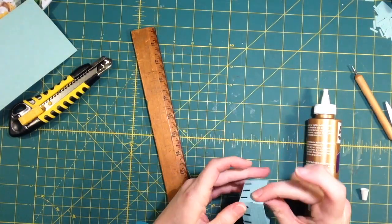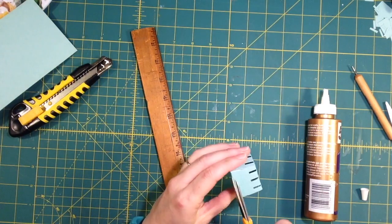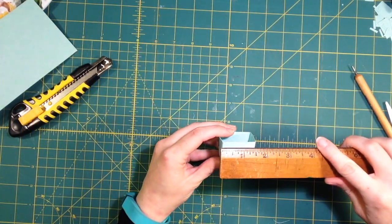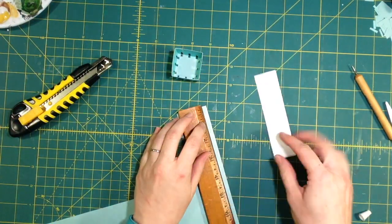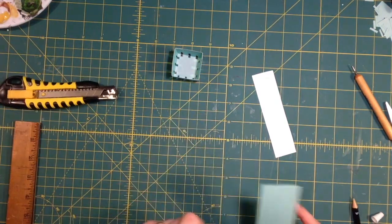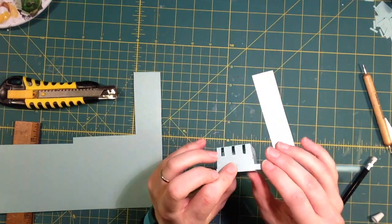Once everything is secure, I'm going to trim a little bit off the top where the tabs stuck out a little. Now from that same paper I used to make the basket, I'm going to cut a thin strip that's long enough to go around the outside of the basket.